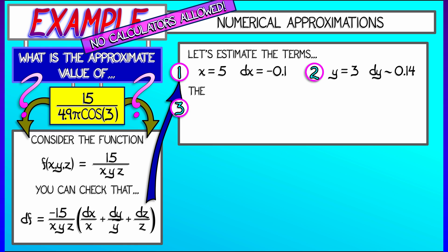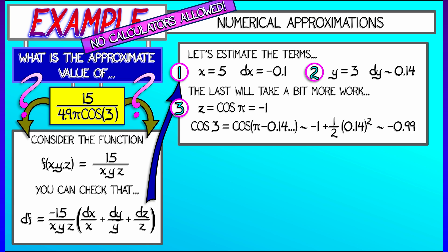This last one, the z value, we're going to have to think a little bit harder because I need to estimate cosine of 3. I know what cosine of pi is. That's negative 1. Let's call that z. Cosine of 3 is cosine of pi minus 0.14 and some other stuff. Let's use our knowledge of the Taylor series of cosine about pi to say that this is really negative 1 plus 1 half times 0.14 squared. 0.14 squared, that's like 0.02 something, divide by 2. That's 0.01, negative 1 plus 0.01, that's minus 0.99. That means my dz term is going to be approximately 0.01.